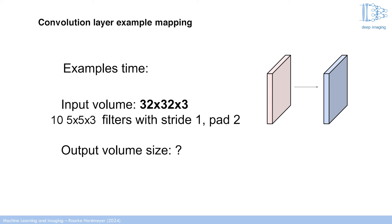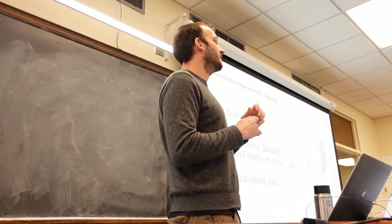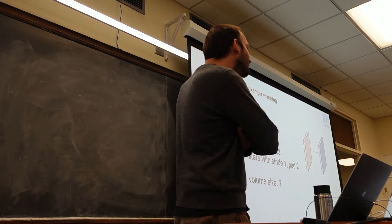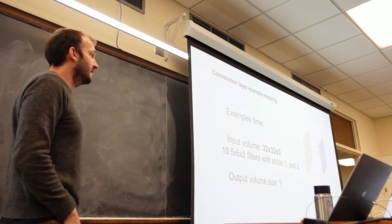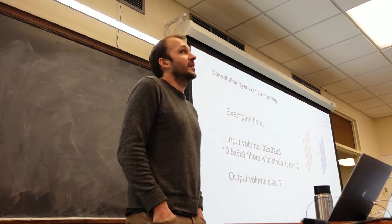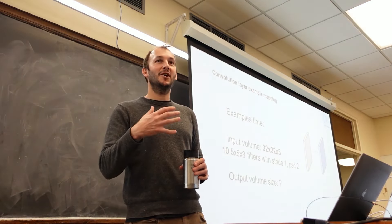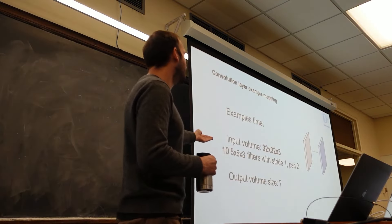Let's do another example. We have an input volume — a color image — that's 32×32×3. We're going to apply 10 unique filters each 5×5×3 with a stride of 1 and a pad of 2. The third dimension of the output is going to have 10 entries because we're prescribing 10 unique filters. For the spatial dimensions, when you pad by 2, it just adds a border, so the new input becomes 36×36×3.